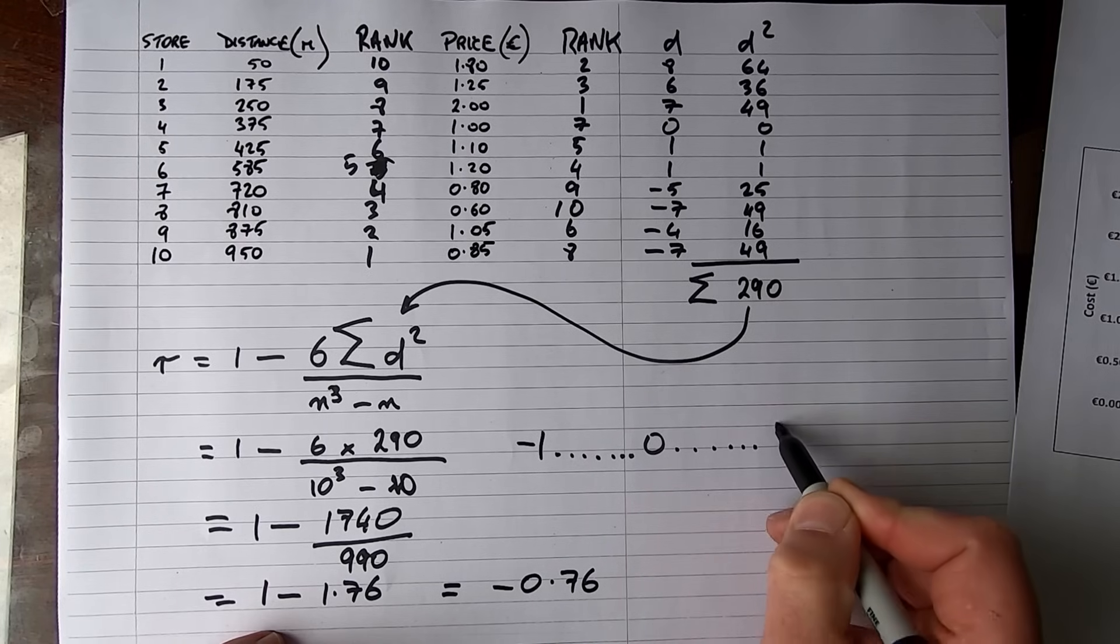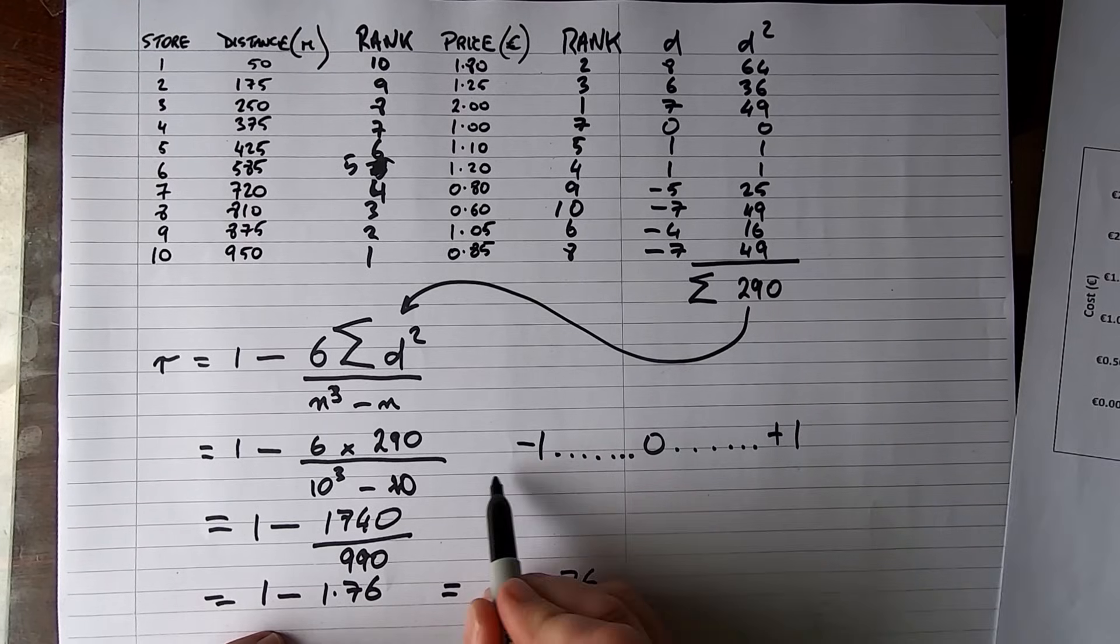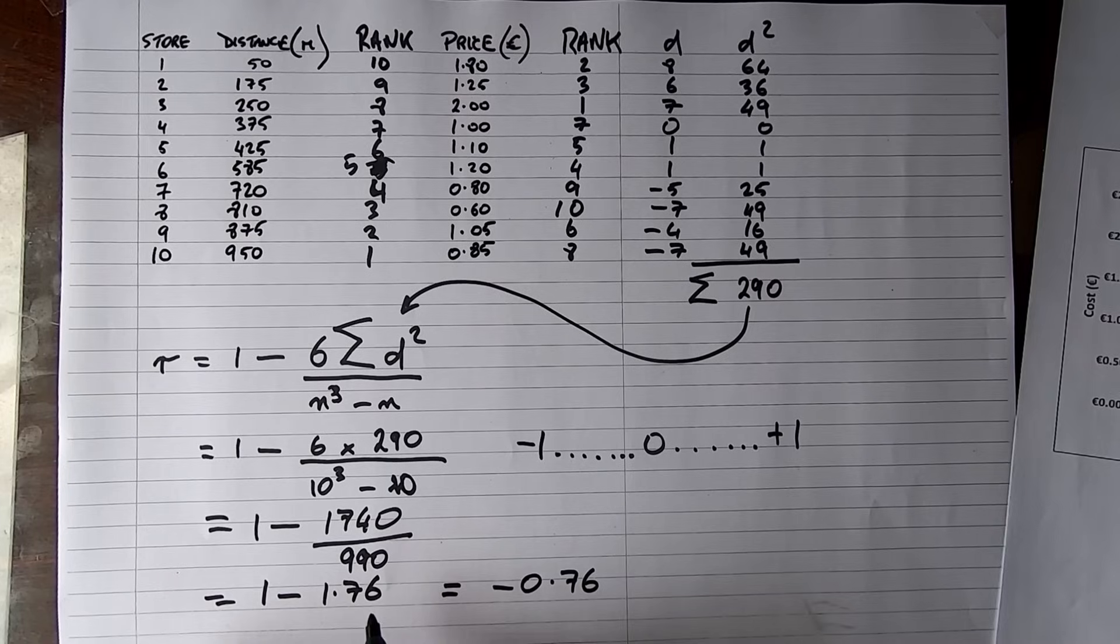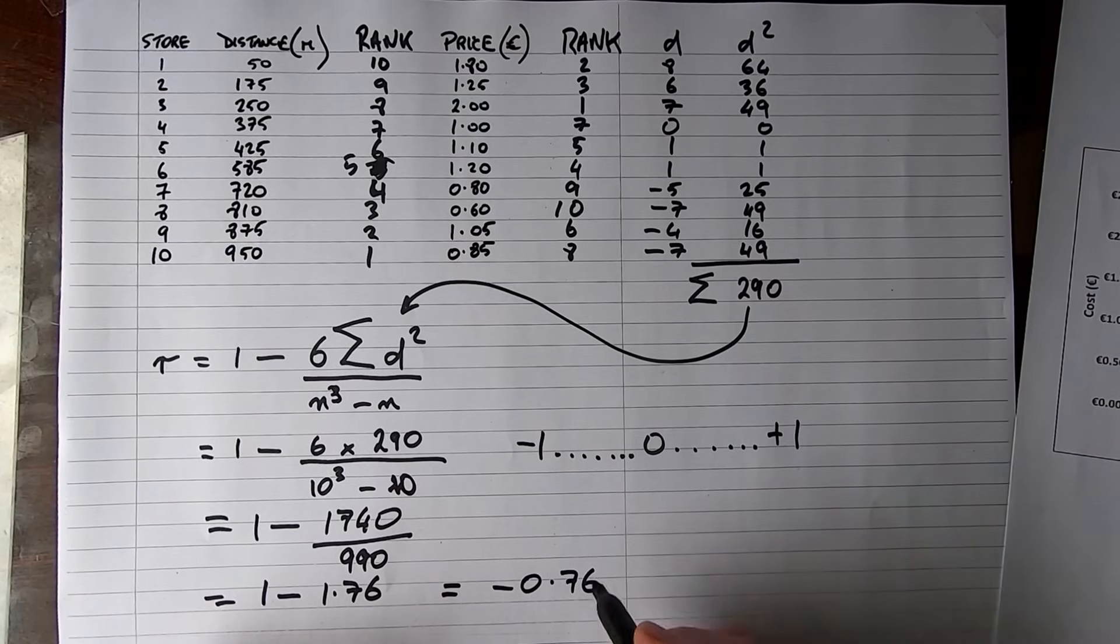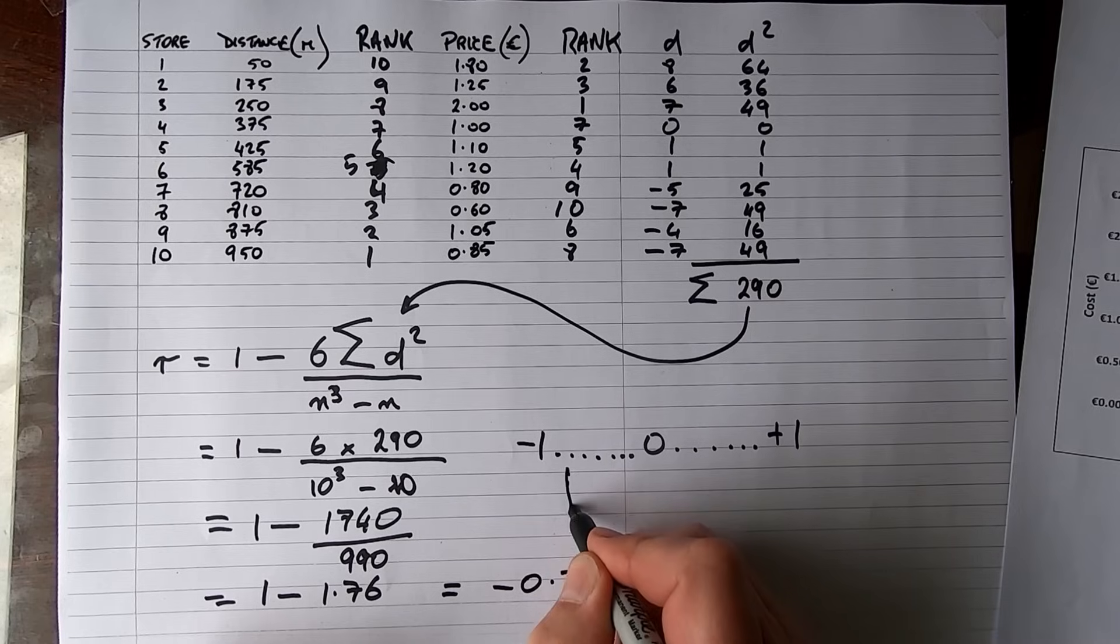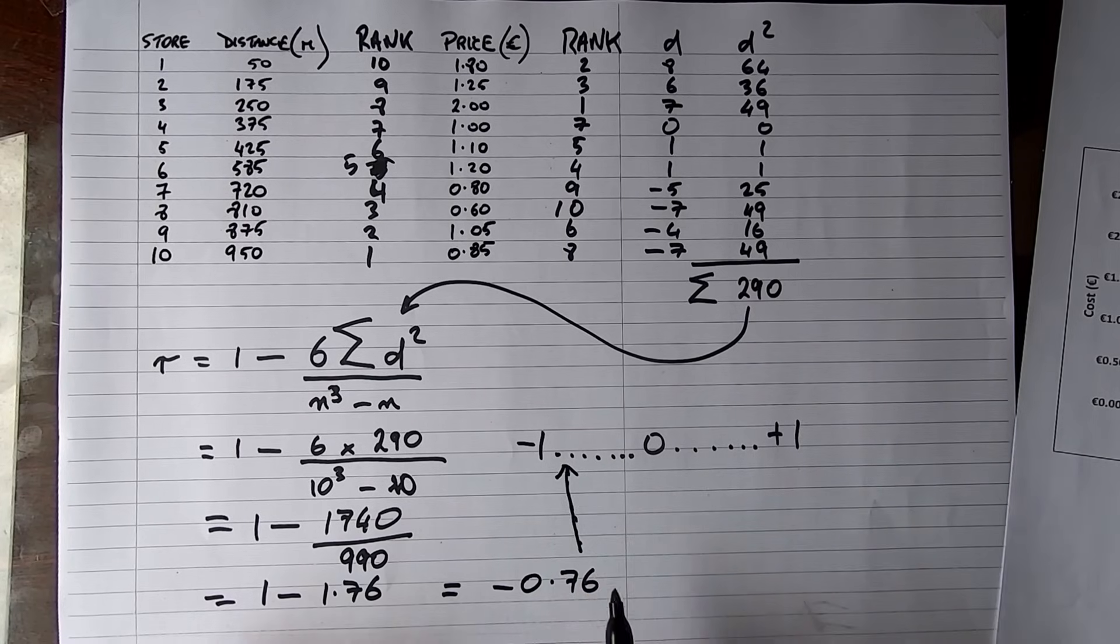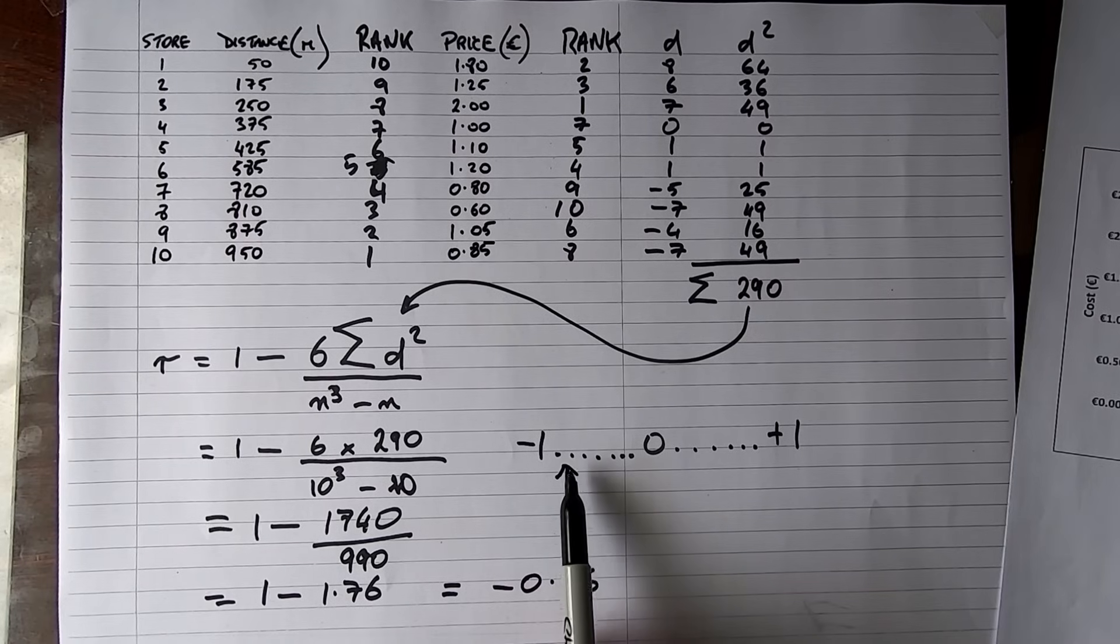Our R is measured at 0.76. So the rule of thumb in correlations is the lowest value is minus 1 and the highest value is plus 1. If you get a value higher than plus 1 or lower than minus 1, it means there's an error in your calculations. It's not possible to get a correlation coefficient below minus 1 or above plus 1. We can see our 0.76 value is going to be roughly somewhere around there on our rule of thumb, and that tells us that we have a medium to strong negative correlation.